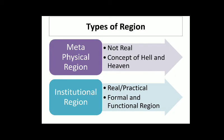Next, the types of region. If we simply classify regions, then on the basis of reality or practicality we can classify regions into two types: one is the metaphysical region and another one is the institutional region. A metaphysical region is not real practically — for example, concepts like heaven and hell, which exist only in the human mind, are metaphysical regions. A region that practically and really exists is called an institutional region. Institutional regions are further classified into formal regions or functional regions.